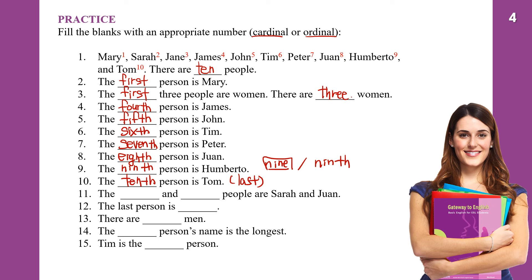The second and the eighth people are Sarah and Juan. Sarah is number two and Juan is number eight — so the second and the eighth. The last person is Tom, who is the tenth one.